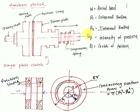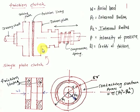Welcome to MCNotek YouTube channel. Today's topic is friction clutch. In friction clutch there are three types: plate clutch, cone clutch, and centrifugal clutch. Today we are going to discuss about a plate clutch. Here you can see this figure — this is a single plate clutch.